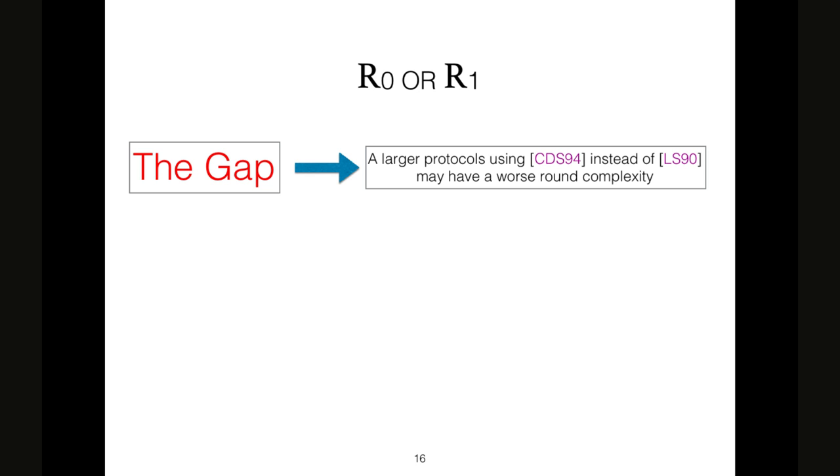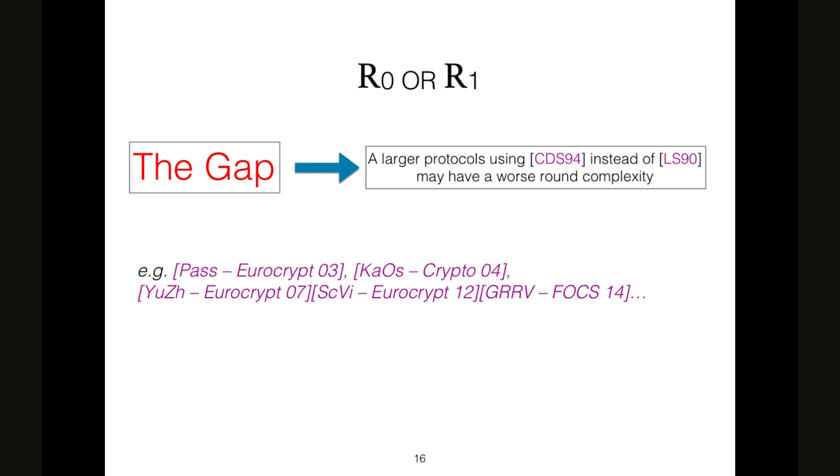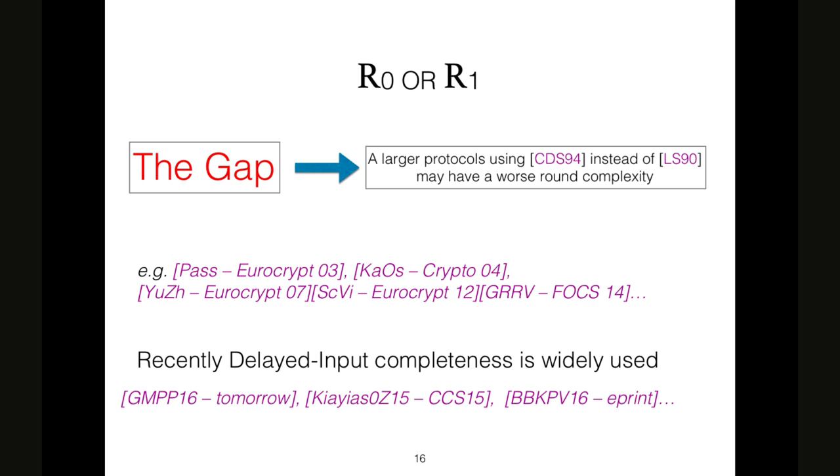Why is this gap so important? The reason is that a protocol that uses CDS instead of LS may have worse round complexity, even if it is more efficient. Here we have some examples of papers that discuss this. And also the delayed input completeness is widely used in recent works.